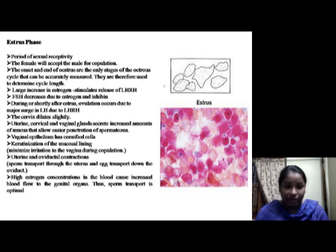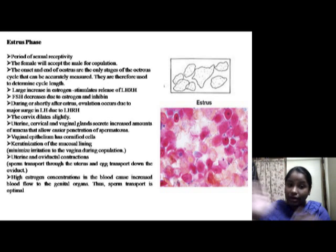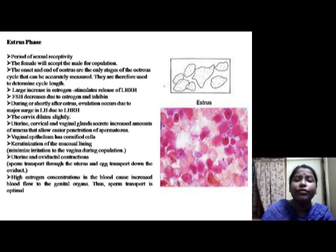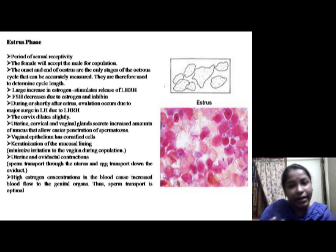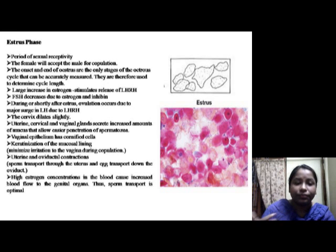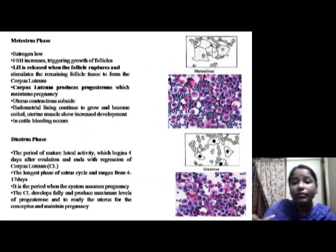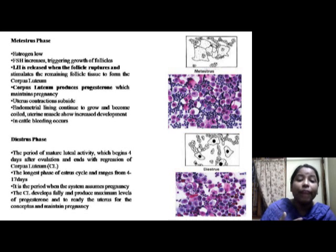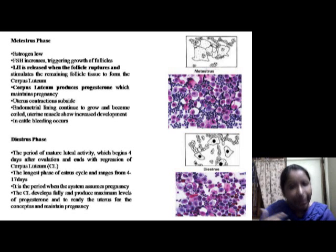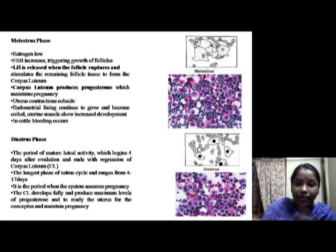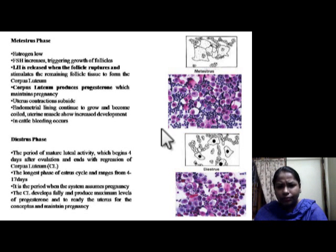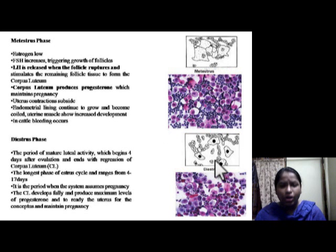The metaestrus stage is the period between ovulation and the formation of the corpus luteum. During early metaestrus, both estrogen and progesterone levels are low and the ovulated follicle undergoes transformation to become the corpus luteum. In late metaestrus, progesterone hormone levels rise, estrogen levels fall, the endometrium lining thickens, and uterine muscles show increased development. Photographs show the cell structures during the metaestrus and diestrus stages.